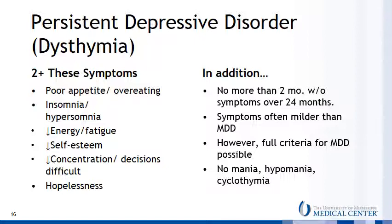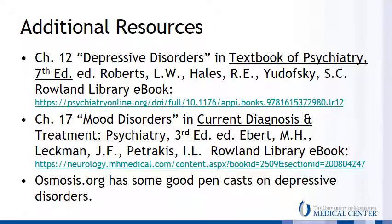You'll find descriptions of those in Module 5. You can find a good synopsis of this material in chapter 12 on depressive disorders in the Textbook of Psychiatry, as well as in chapter 17 on mood disorders in Current Diagnosis and Treatment Psychiatry, both of which are available at Rowland Library. In addition, osmosis.org has some good pencasts on depressive disorders.